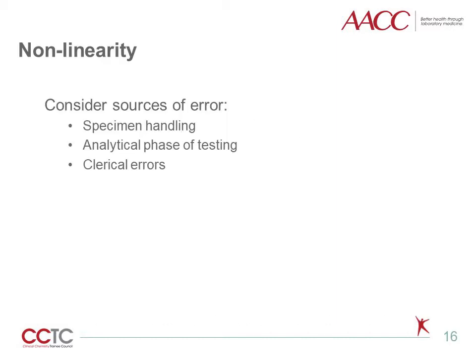We will now discuss what to do if an assay is not linear over its AMR or if unexpected bias or imprecision is present. If results show the assay is nonlinear over the full range or even a partial range, there are three areas to focus troubleshooting. First, review specimen handling steps: were samples stored appropriately, were kit instructions followed, and were patient samples processed according to standard operating procedure, including adequate mixing, centrifugation, and other necessary steps? Next, examine the analytic phase: were standard operating procedures followed, was instrument maintenance performed, were quality control results acceptable, were reagents used with instability, were any flags or errors generated by the instrument, and was testing performed by a competent individual?